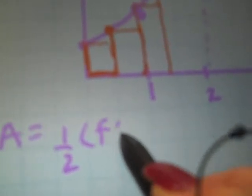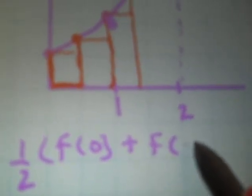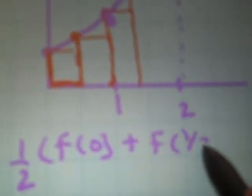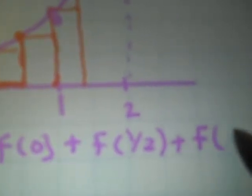So the area is our delta x times the initial value for left hand, so f of 0, plus f of, add delta x to 0, which is 1 half, so f of 1 half, add another half, so that's one, add another half, and your final endpoint there is three halves.